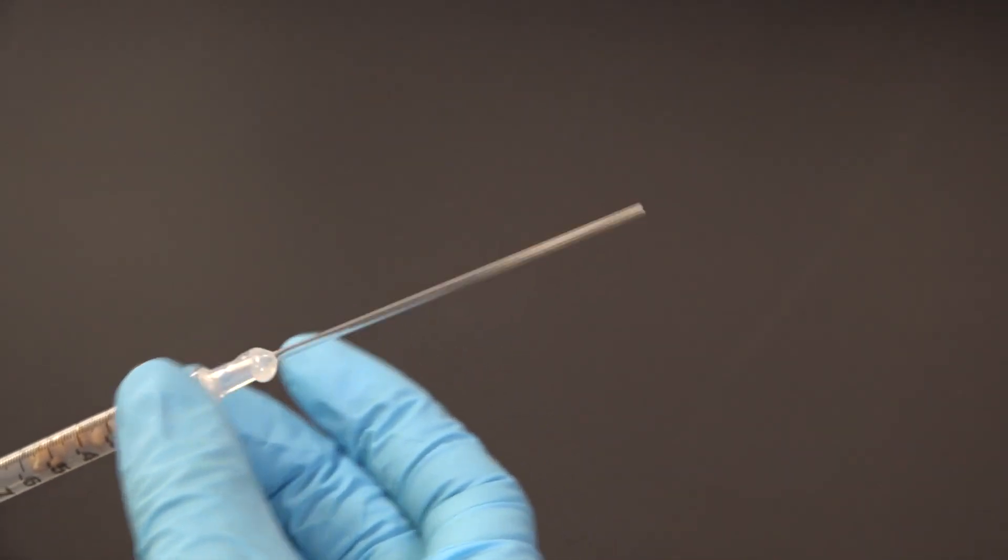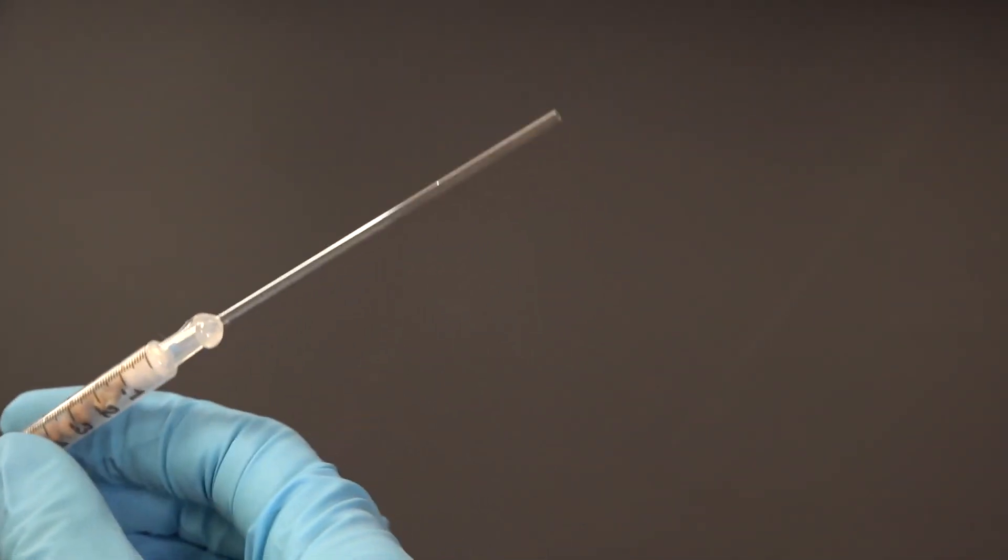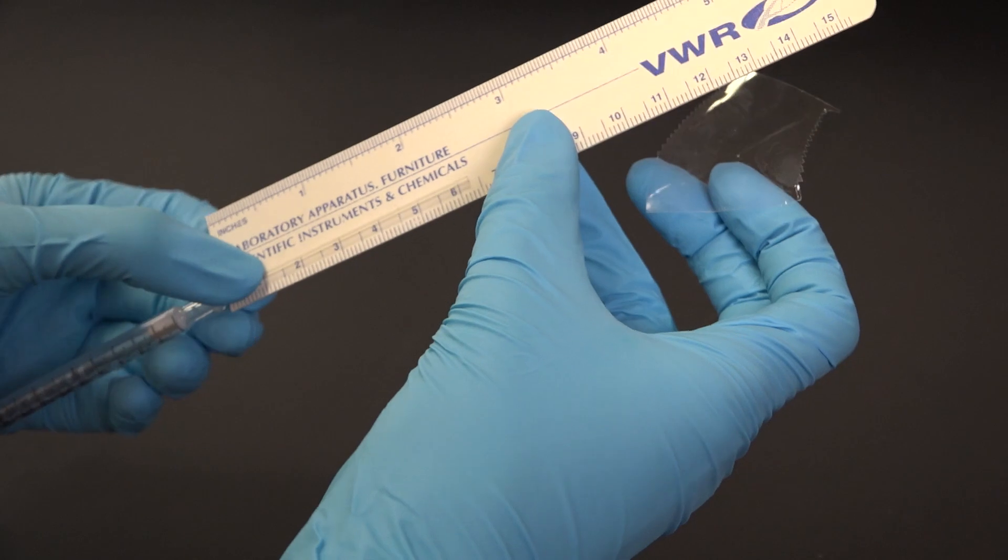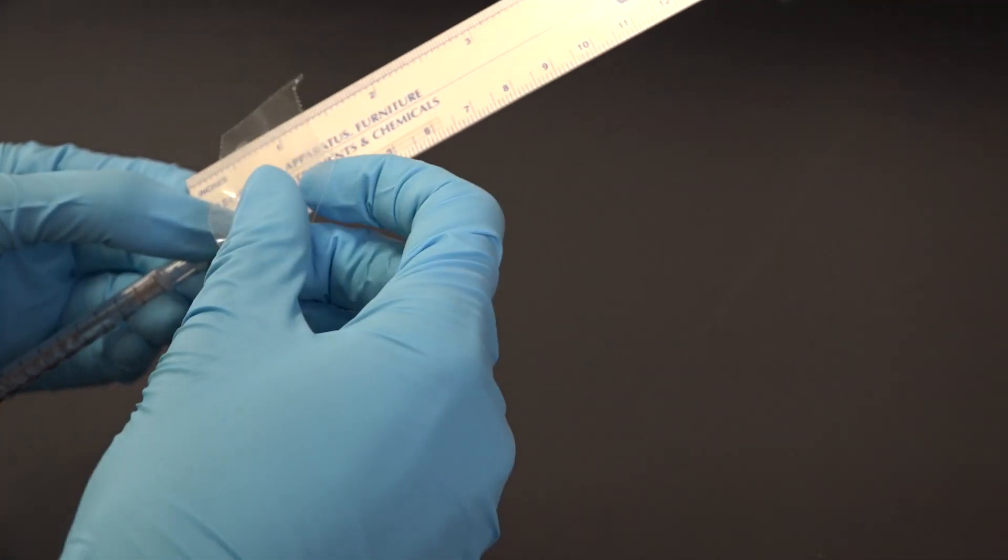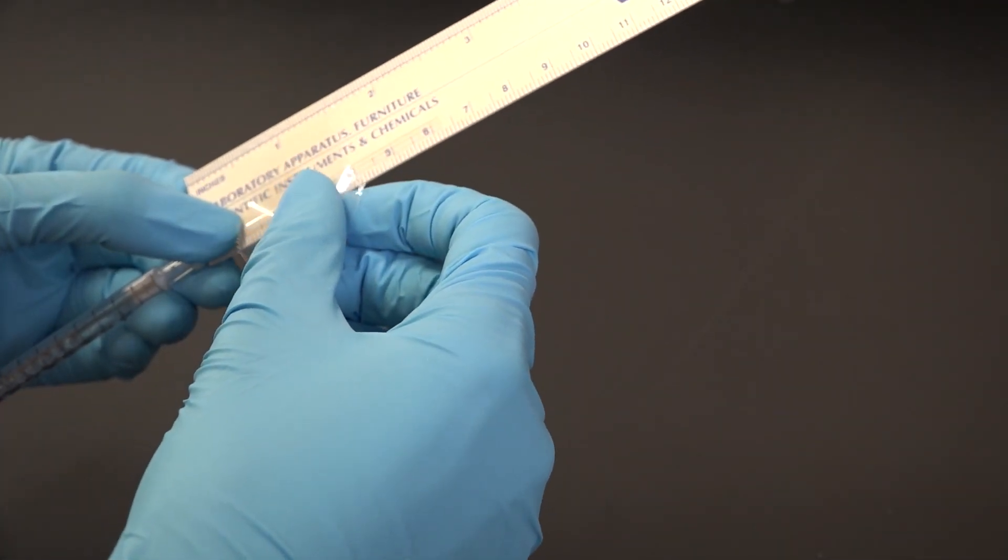Lastly, I'm going to place a couple washers around the barrel of my respirometer for added weight. You'll see why in a minute. And then I'll tape a ruler to the capillary tube so that we can keep track of how far our fluid moves.